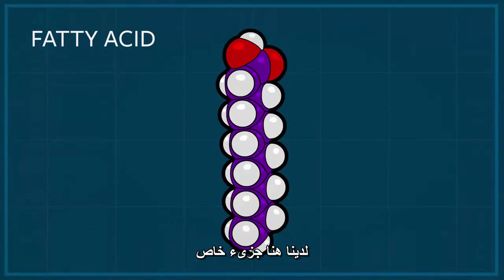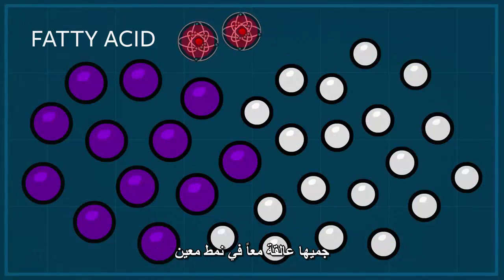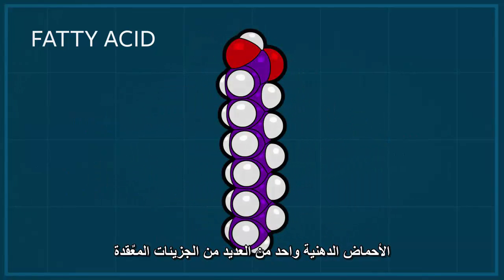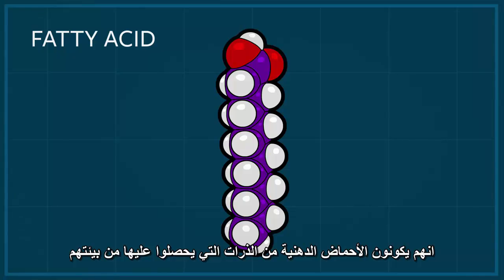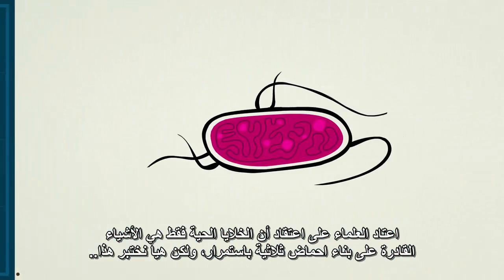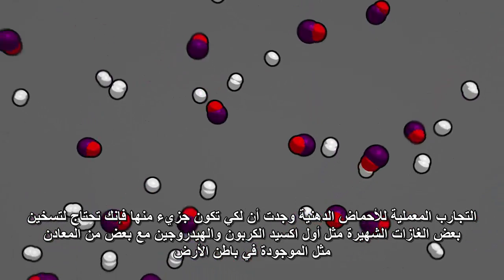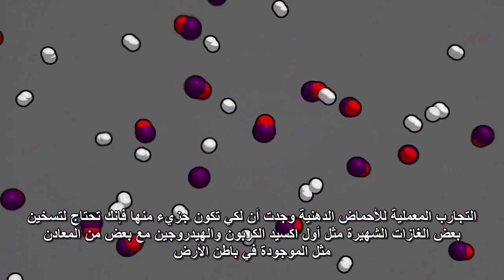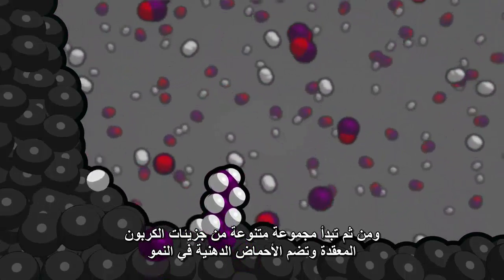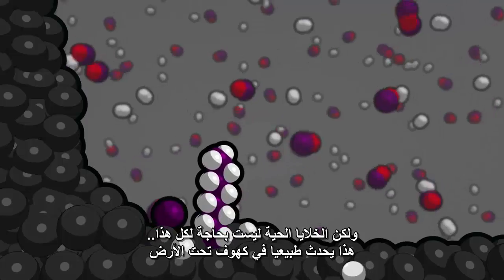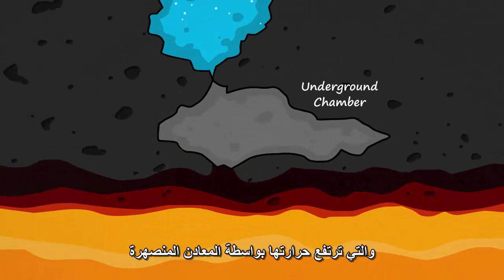This here is a special molecule called a fatty acid — a collection of carbon atoms, hydrogen atoms, and oxygen atoms all stuck together in a specific pattern. Fatty acids are one of many complex molecules that living cells use inside their bodies. Lab experiments have shown that if simple common gases — carbon monoxide and hydrogen — are heated up with minerals like those found in the Earth's crust, a variety of complex carbon molecules, including fatty acids, begin to grow. Living cells are not needed. This can happen naturally in underground chambers heated by the Earth's magma.